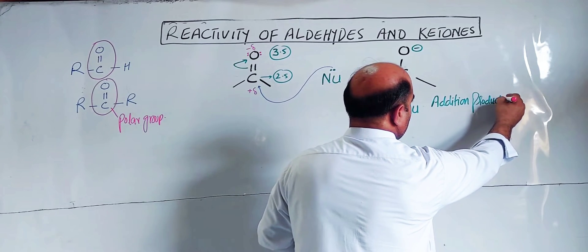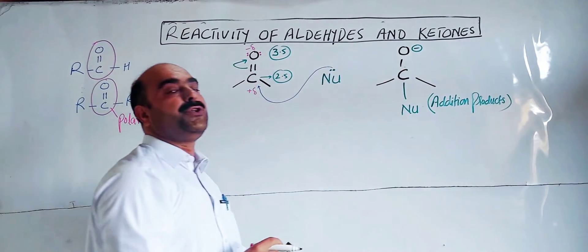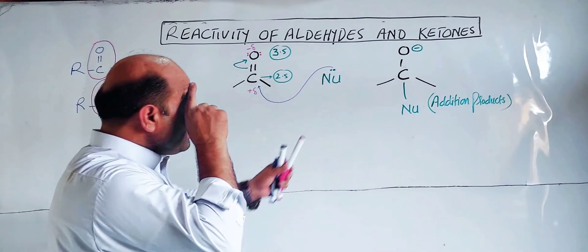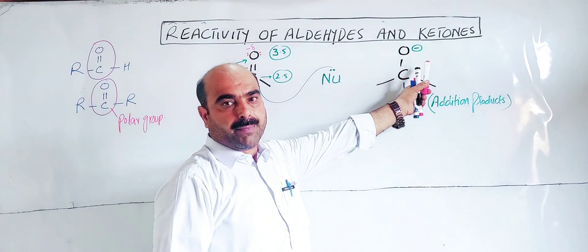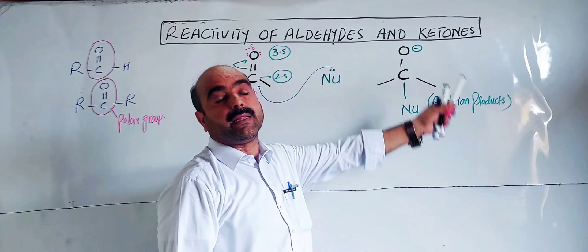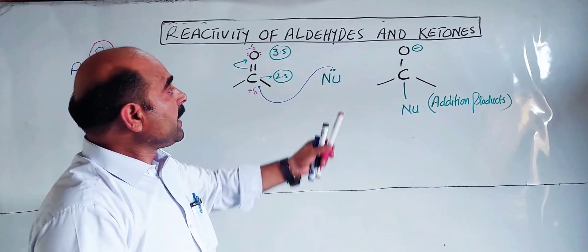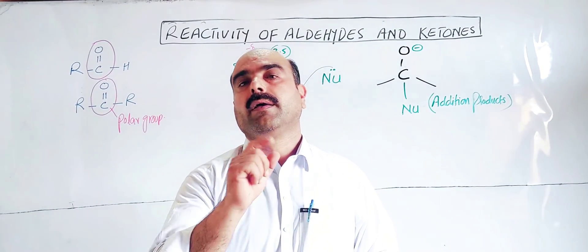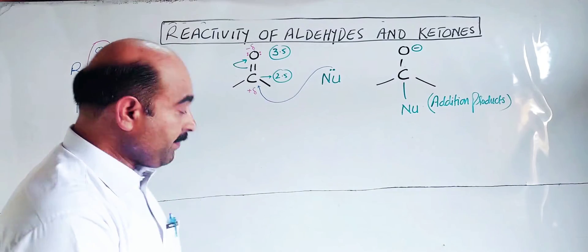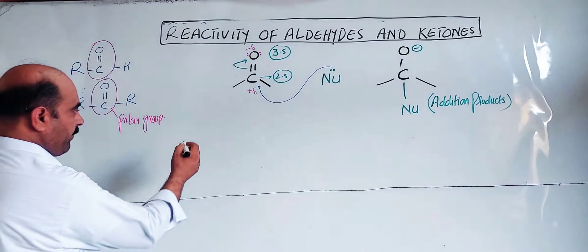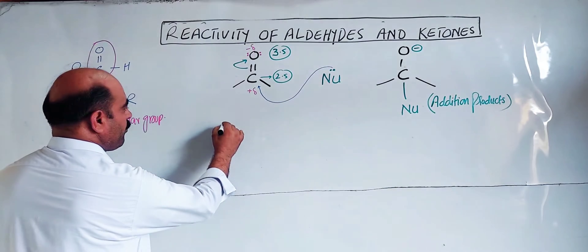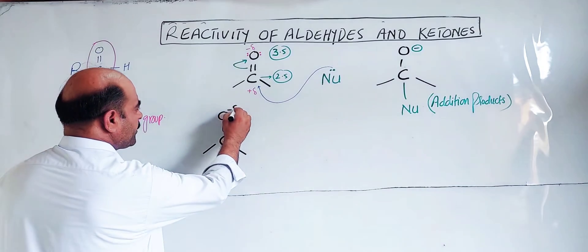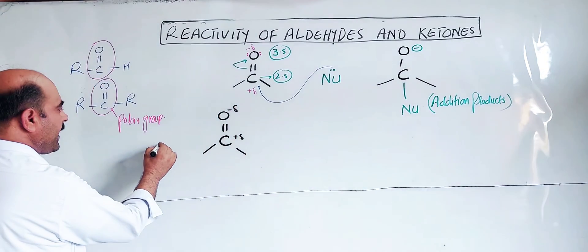The main reactions of aldehydes and ketones are nucleophilic addition reactions. An electrophile is an electron lover. These reactions can be catalyzed using acid or base. For example, in the presence of a base catalyst, the carbonyl group has partial negative and partial positive character. The base is a hydroxide, and products are formed accordingly.